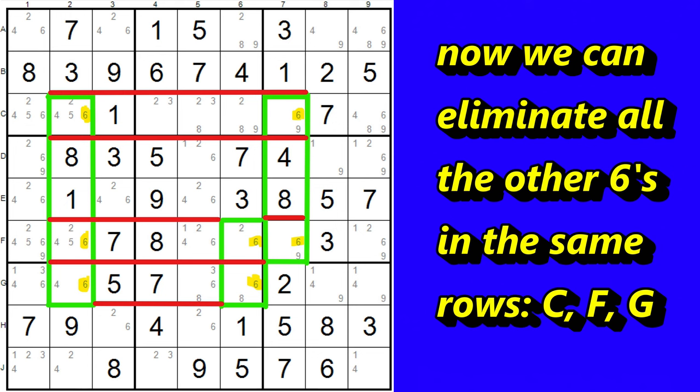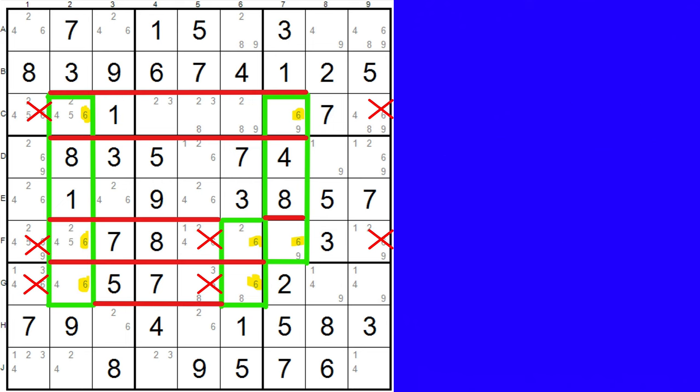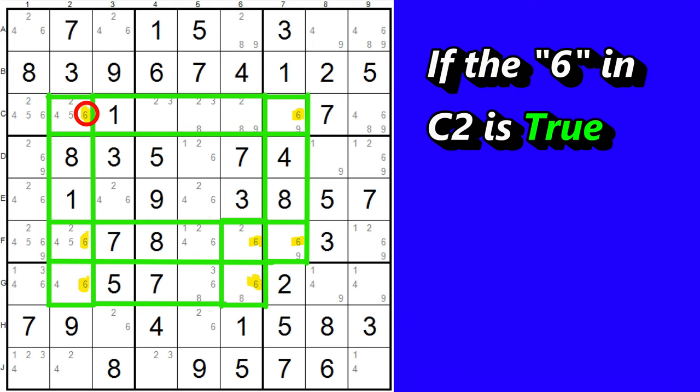So we can eliminate these 6s in row C, and these 6s in row F, and these 6s in row G.